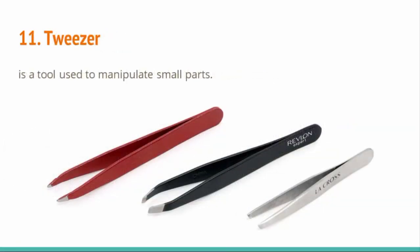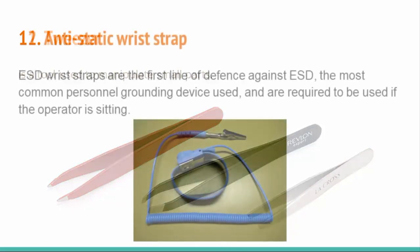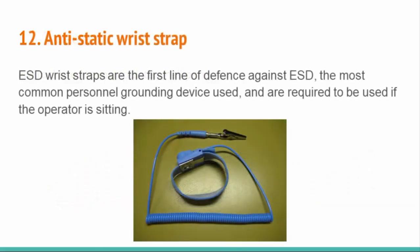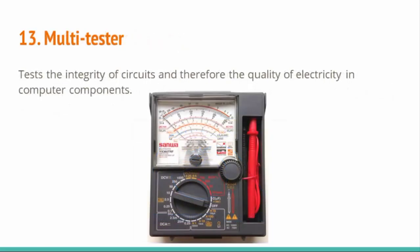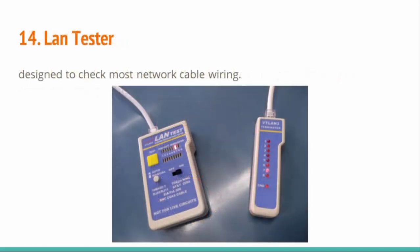Number 11: Tweezer — a tool used to manipulate small parts. Number 12: Antistatic wrist strap — the first line of defense against ESD, and the most common personal grounding device, required to be used when the operator is sitting. Number 13: Multitester — tests the integrity of circuits and the quality of electricity in computer components. Number 14: LAN tester — designed to check most network cable wiring.